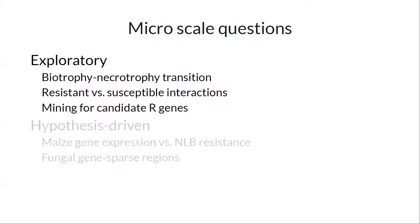The exploratory questions I think are really fascinating: what does the biotrophic-to-necrotrophic transition look like in both the host and the pathogen? What is the difference between a resistant and susceptible interaction? We also have HT2 mapped and AVR HT2 mapped — somewhere in our transcript reads are the genes we're looking for. Can we use criteria to narrow down our very long candidate list?